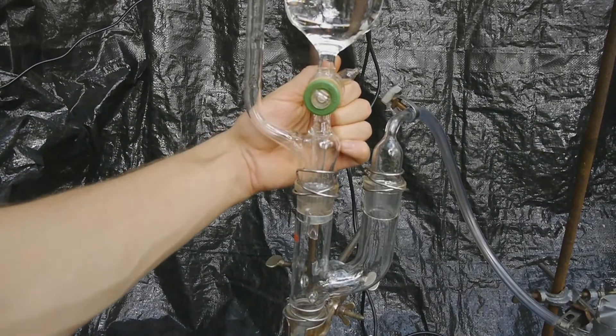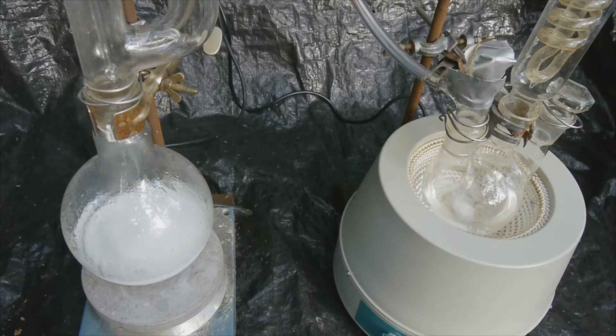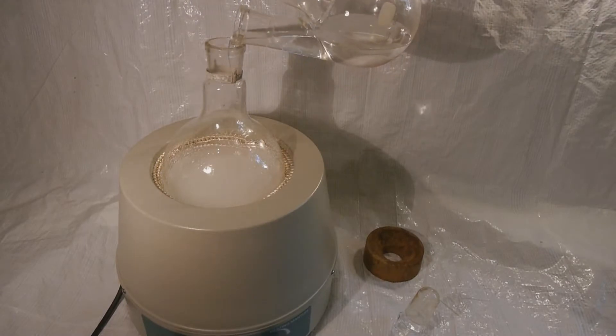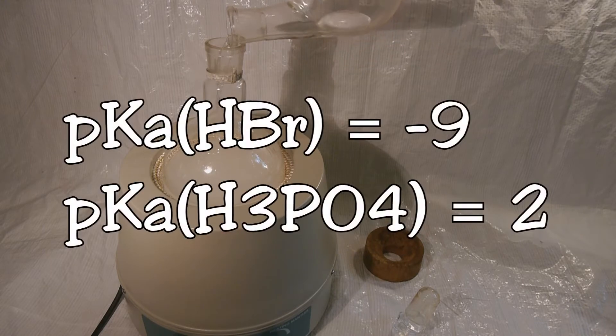Needless to say, this totally failed because the phosphoric acid completely refused to react with the sodium bromide, even at elevated temperatures. I tried to save the experiment by pouring the ethanol into the sodium bromide phosphoric acid mixture, but it also didn't react because the phosphoric acid is 11 orders of magnitude weaker than the hydrobromic acid.